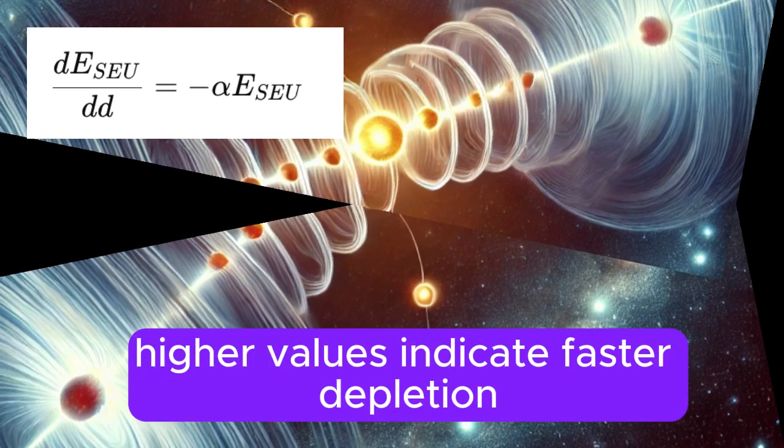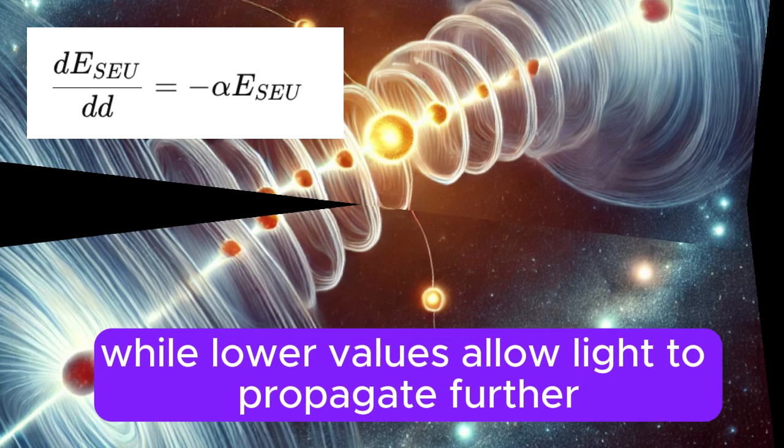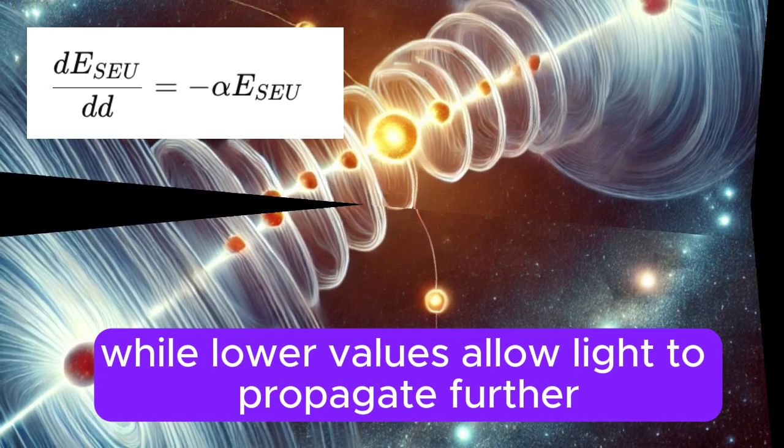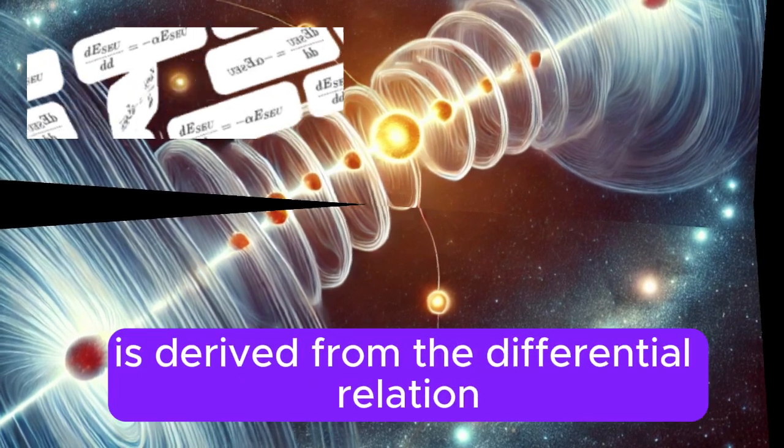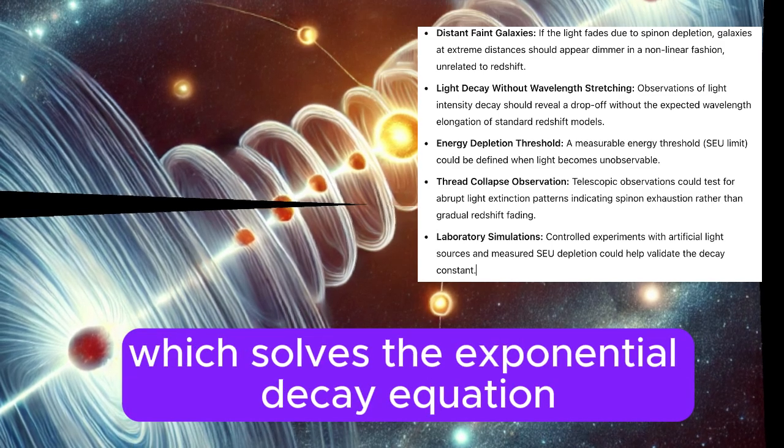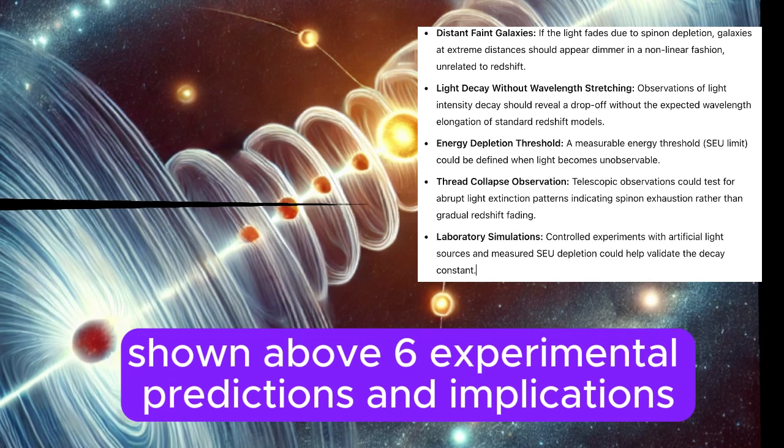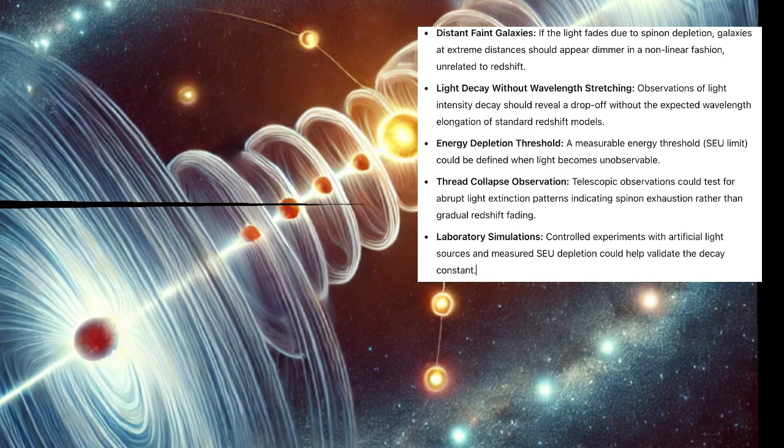Higher values indicate faster depletion, while lower values allow light to propagate further. The decay formula is derived from the differential relation, which solves the exponential decay equation shown above.